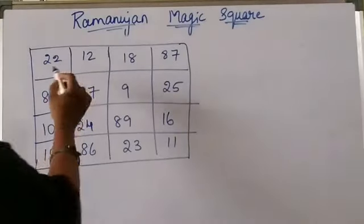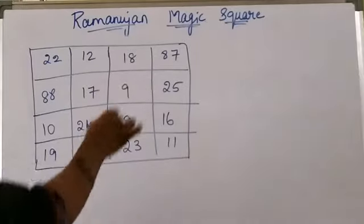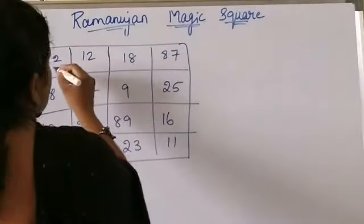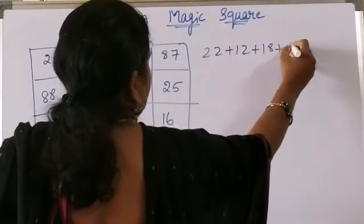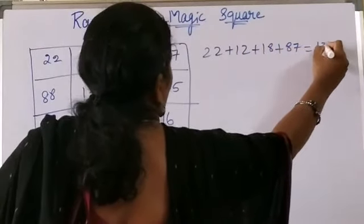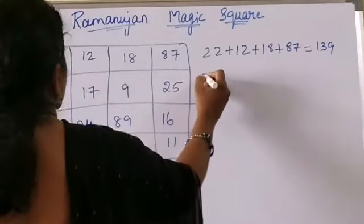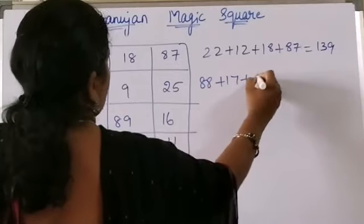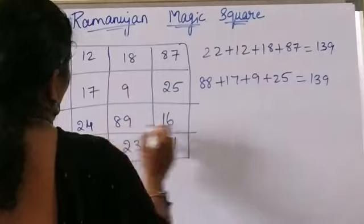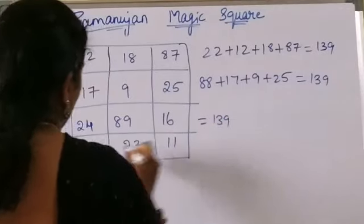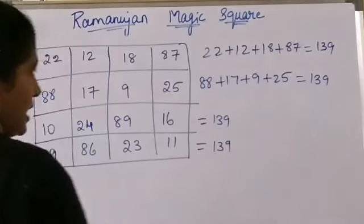We are adding 4 rows and 4 columns. When you add the first row — 22 plus 12 plus 18 plus 87 — you will get 139. Similarly, add 88 plus 17 plus 9 plus 25, you will get 139. When you add all four numbers in each row, you will get 139.